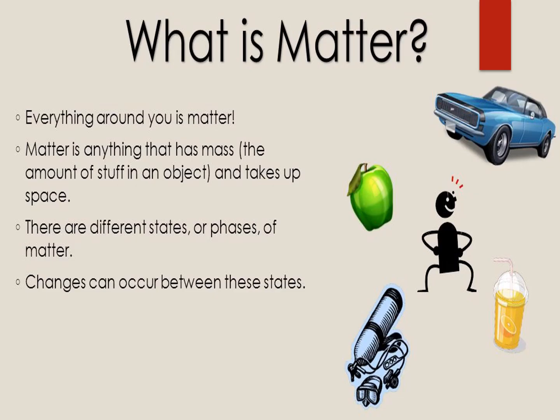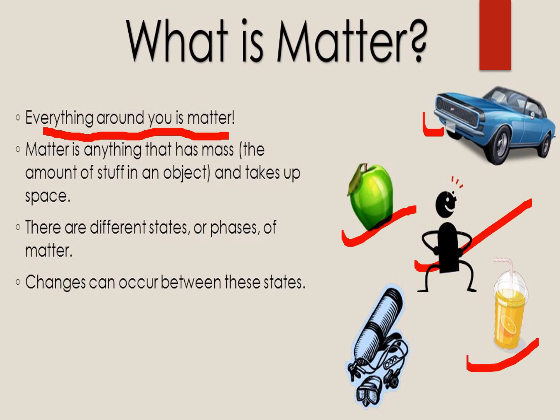Now, we are going to know what is the meaning of matter. Matter is anything or everything around us, like cars, fruits, humans, juice, and oxygen. Everything around us, at home, or street, or school, we will call it a matter. Matter also is anything that has mass and volume and takes up space. There are different states or phases of matter, and changes can occur between these states.